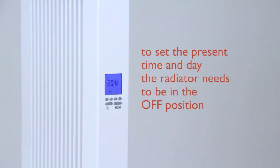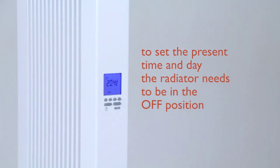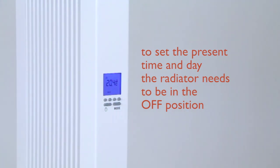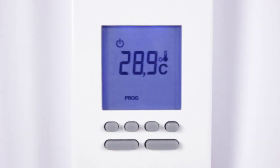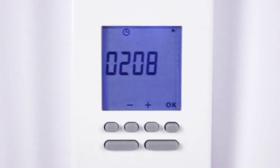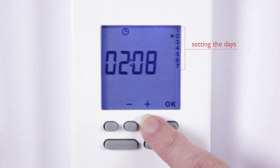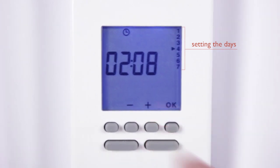To set the present time and day, the radiator needs to be in the off position. Press the MODE key and the days will flash on the right hand side. Press the plus or minus buttons to select your chosen day.